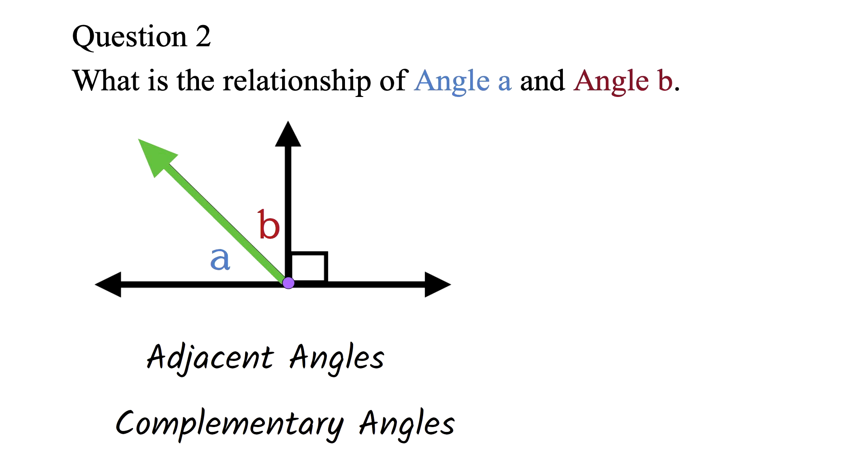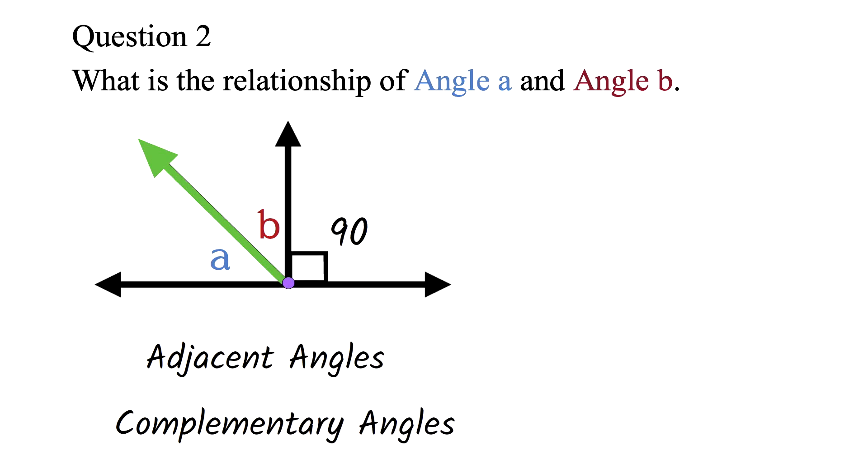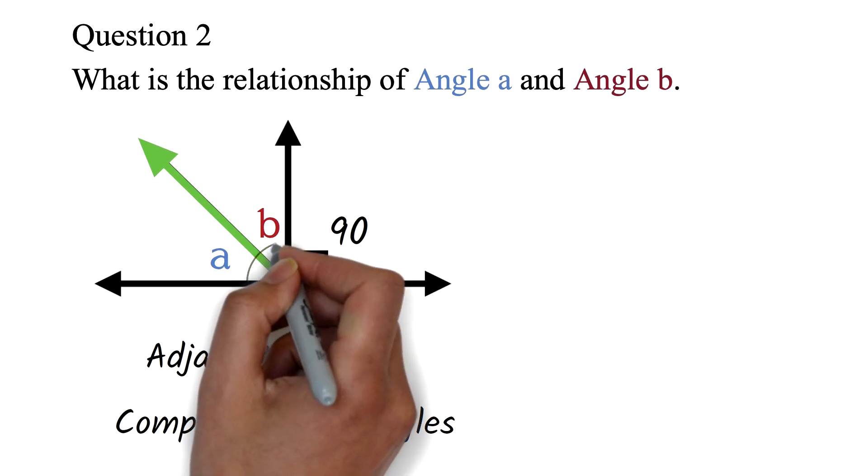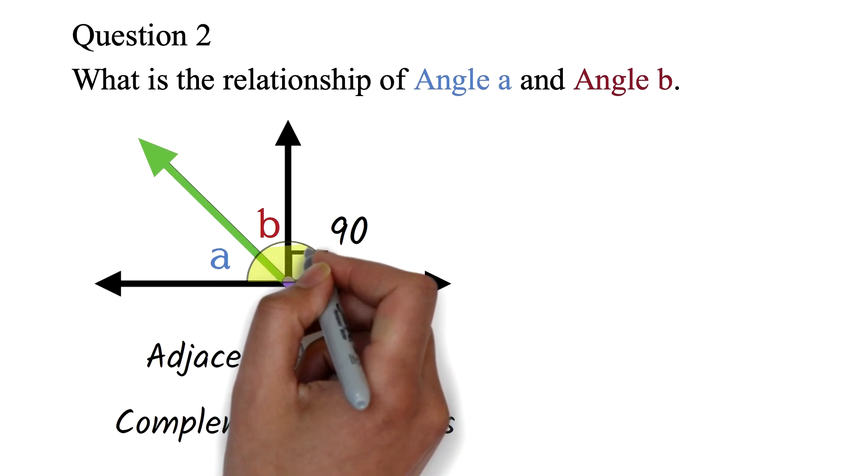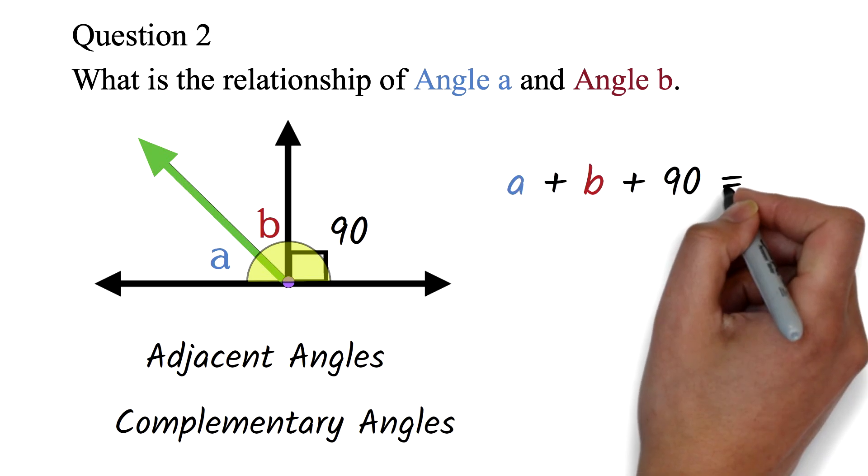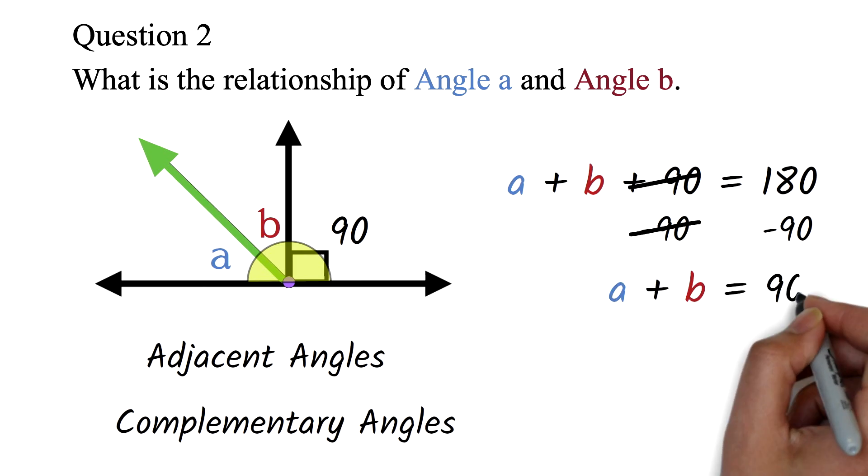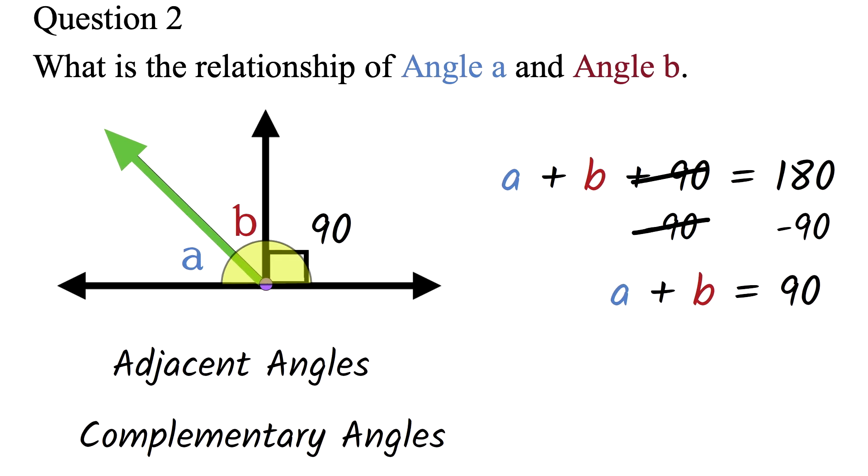There are a few things we have to recall from our intro video on types of angles. The first is to notice this mark here. This means this angle is 90 degrees. Also, we learned that the angles on a straight line is 180 degrees. Meaning angle A plus angle B plus this 90 degrees must be equal to 180 degrees. We can subtract 90 from both sides. The 90 will cancel out. 180 minus 90 is 90. This will give us angle A plus angle B equals 90 degrees. Since angle A plus angle B equals 90 degrees, the two angles are complementary.